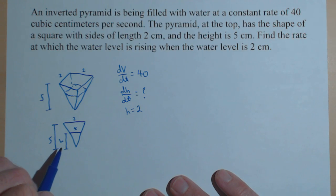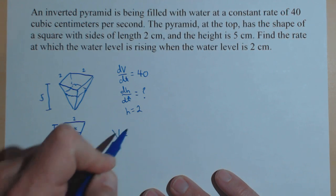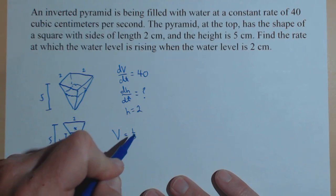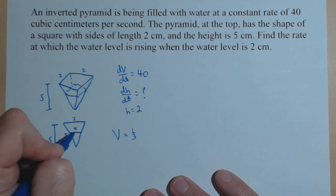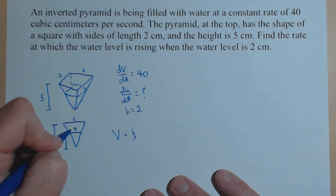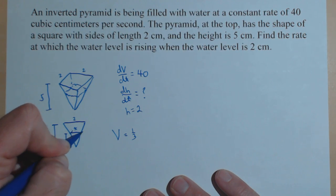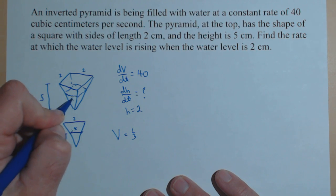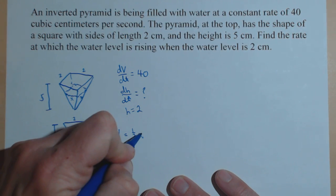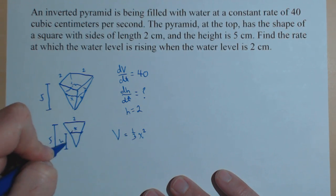Two things come out of our drawing. Number one is I can create a formula for the volume of the water. It's very similar to a cone. It's one-third times the area of the base, which is, remember, this is 3D. This here is x, and this is x. So the area of that base is x squared, and then a height of h.